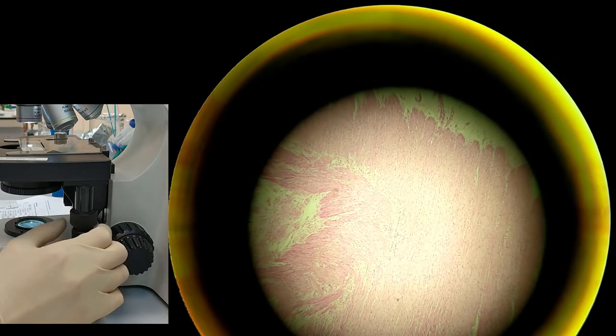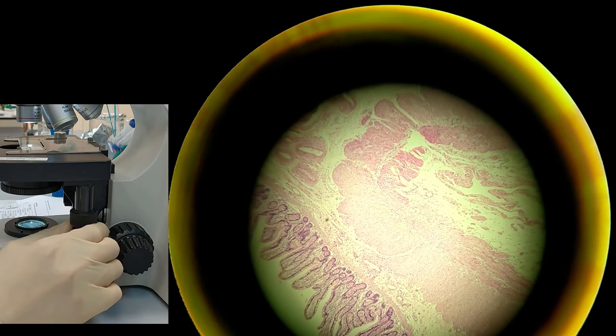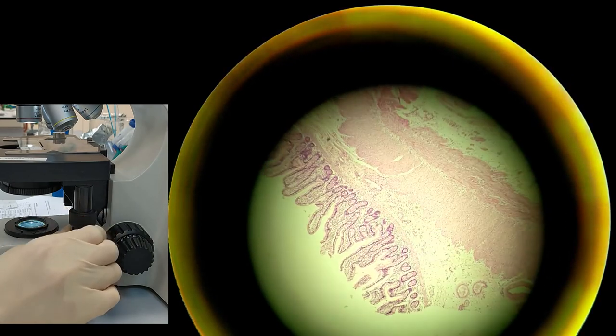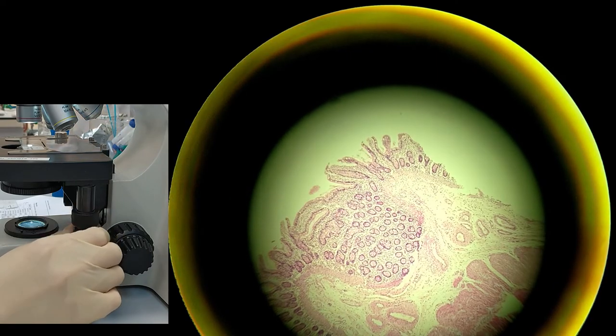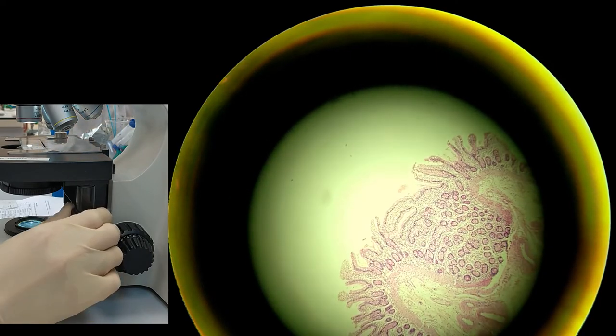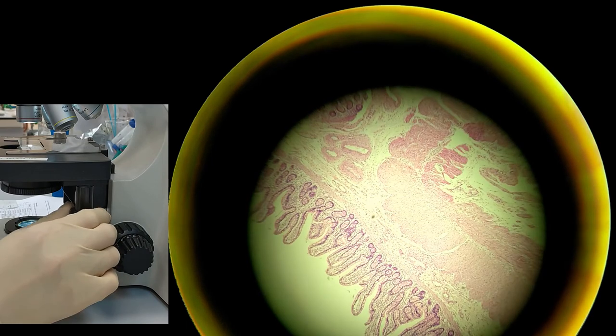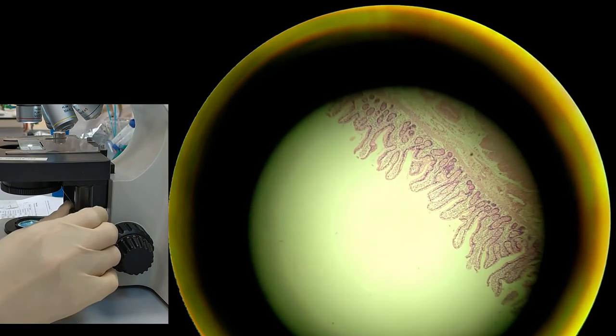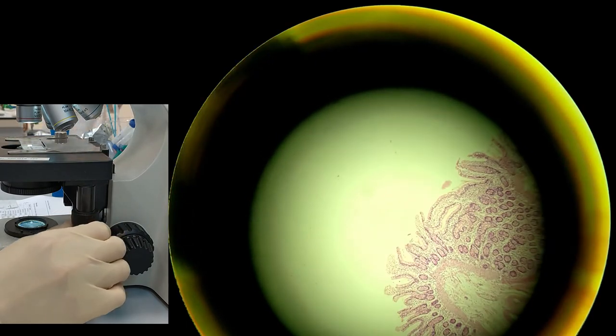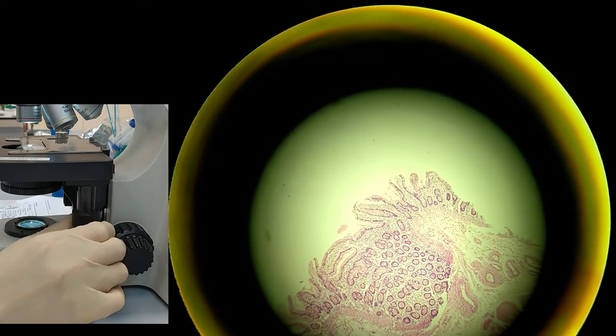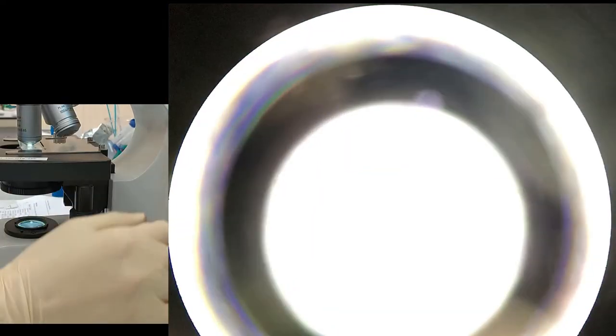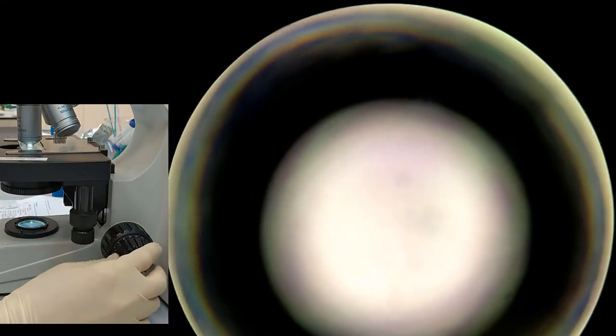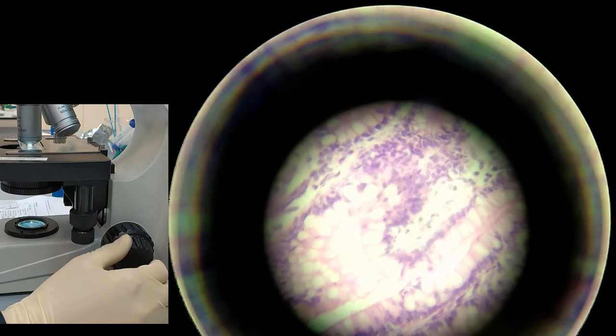Here you can see the intestines, small intestines of the human. As you can see, we have this villi that show the surface of the absorption in intestines. We can increase the magnification to see this trabecula.